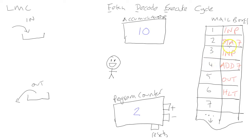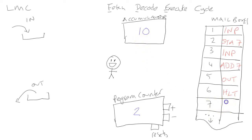He walks over to position two. The instruction says STA — store accumulator — and gives a mailbox location: store whatever's in the accumulator into mailbox seven. He walks to the accumulator, copies the number 10, and stores it into position seven. Having executed that command, he increases the program counter so it points to position three.